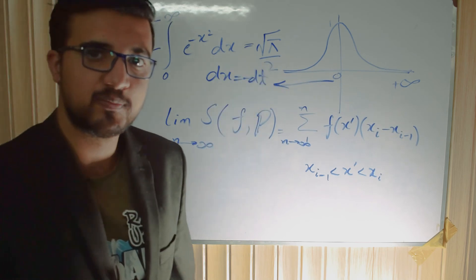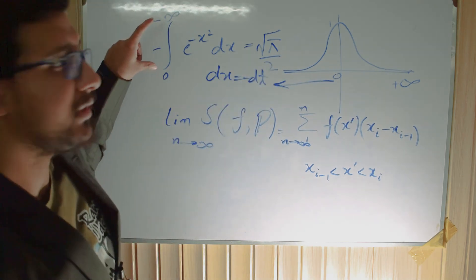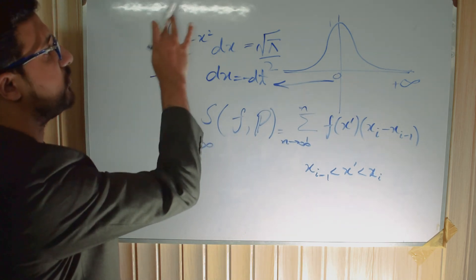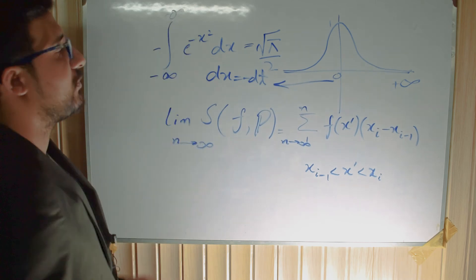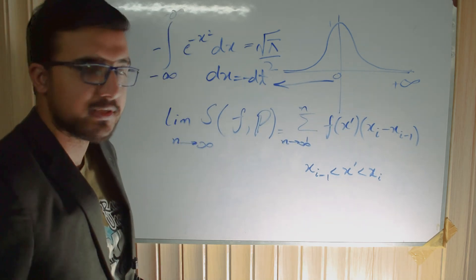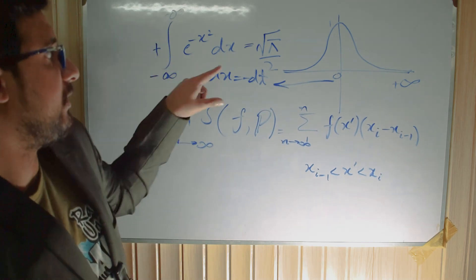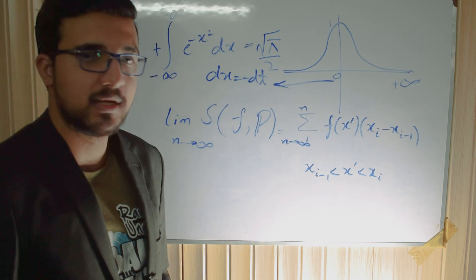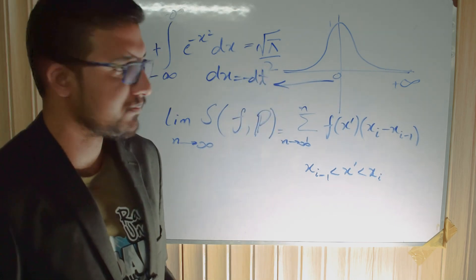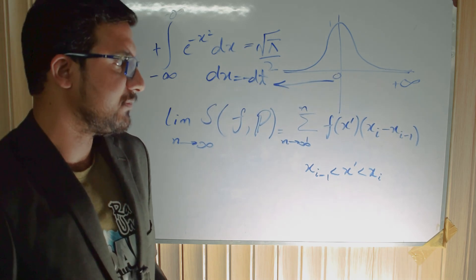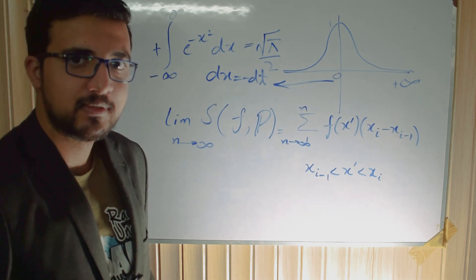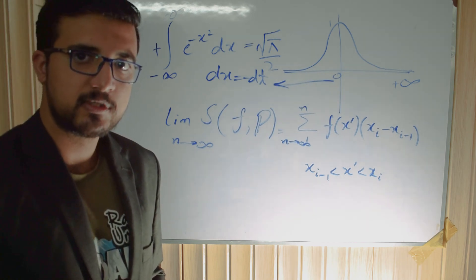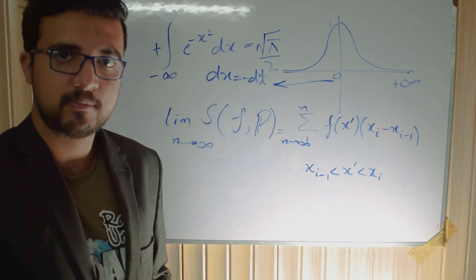So to obtain our answer of root pi over 2, we simply interchange the limits from minus infinity to 0. This introduces another negative sign by the property of definite integrals, and the two negatives cancel, giving us a plus sign. The final answer remains root pi over 2. I hope the video makes the point clear. Please like this video, stay tuned, and subscribe to my channel.